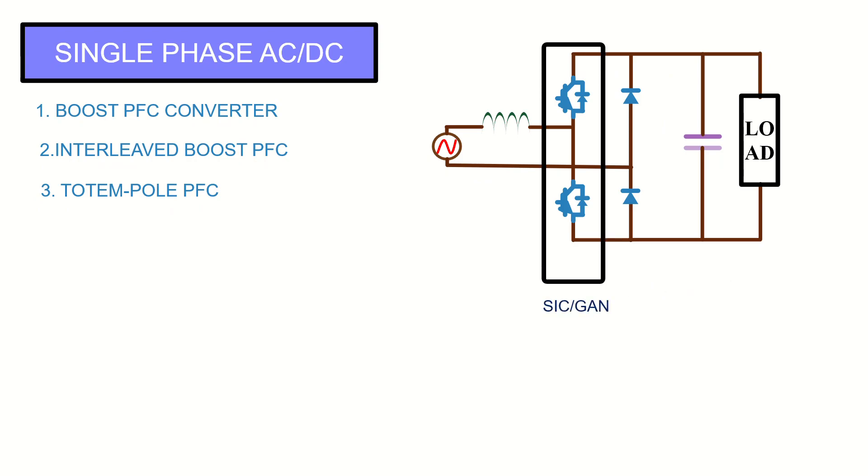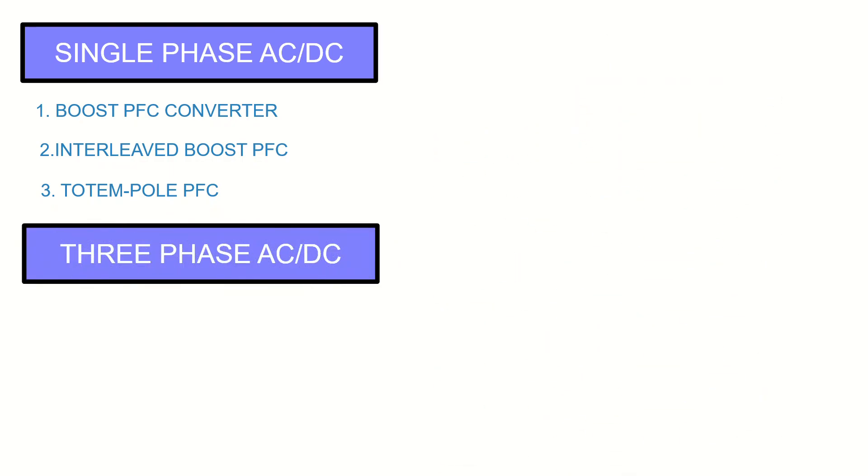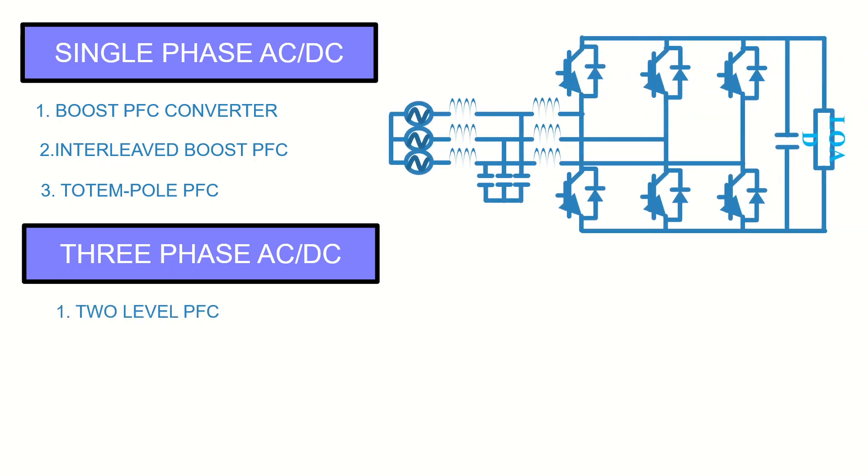In the high-frequency leg of totem pole PFC, silicon carbide or gallium nitride devices are used. And in the low-frequency leg, diodes or silicon MOSFETs are used. For three-phase operation, most common topology is two-level PFC converter. Two-level PFC is a six-switch boost type rectifier, features a very simple circuit topology and easy control. It has bi-directional power flow capability and can achieve a high power factor with reasonable efficiency. One of the drawbacks of this topology is the bulky filter inductor, which it requires to regulate the input current THD to low values.